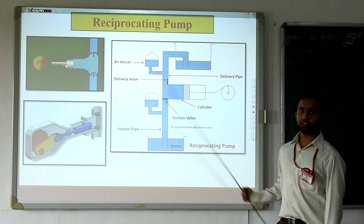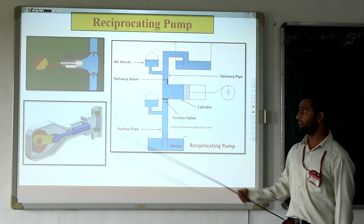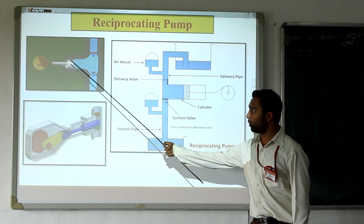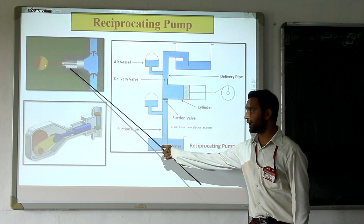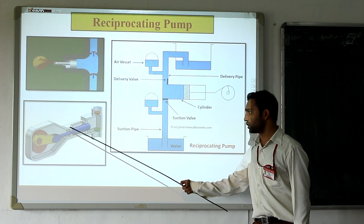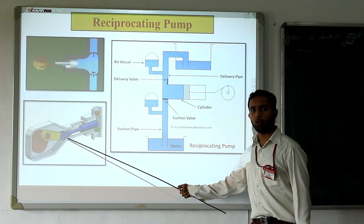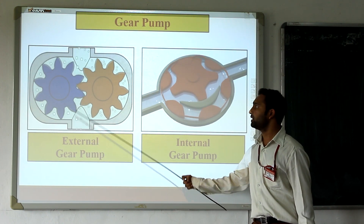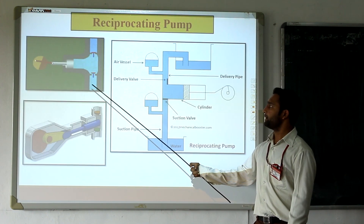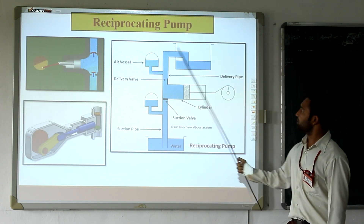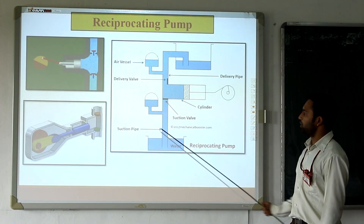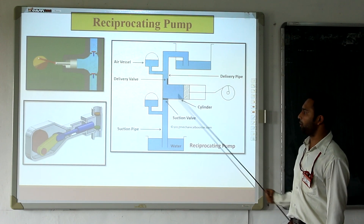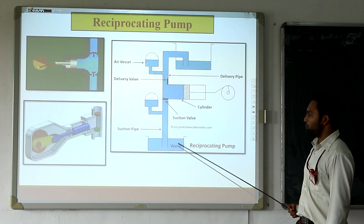Now, starting with the first pump, that is the reciprocating pump. Here the working and construction is indicated. Here the cross-sectional view of the pump design is shown, and here the construction of the pump design is indicated.